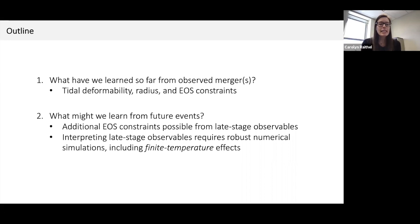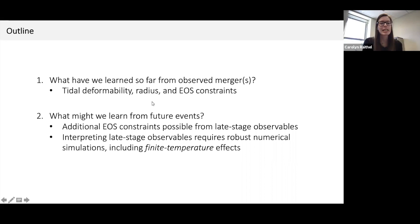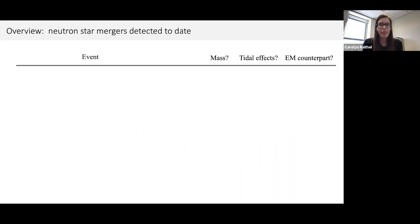In particular, I want to discuss what additional equation of state constraints might be possible from late-stage observables — observations of the system following the actual merger. I'll make the case that interpreting these late-stage observables requires robust numerical simulations including finite temperature effects, because the actual merger introduces significant heating to the system. These late-stage observables probe a different region of parameter space than the early inspiral. To start, let me give a quick reminder of how many mergers have been detected to date.